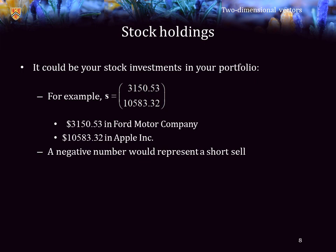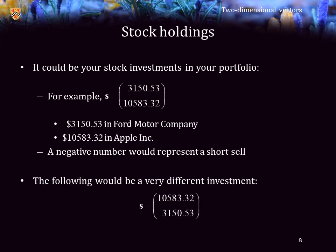A negative number here could, for example, represent a short sell. Remember that vectors are ordered pairs. If we swap the entries, this vector here is going to represent a very different investment from the vector above.